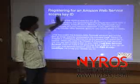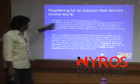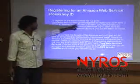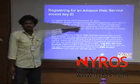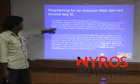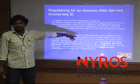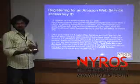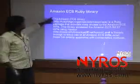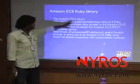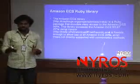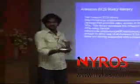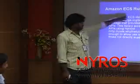Registering for an Amazon Web Service access key ID: to register, go to the AWS website and register as a developer. You will receive an access key ID to use the Amazon Web Service in your Ruby on Rails application. To implement Amazon Web Services in our Ruby on Rails application, we need the AWS ECS Ruby library.